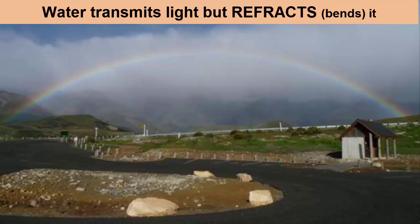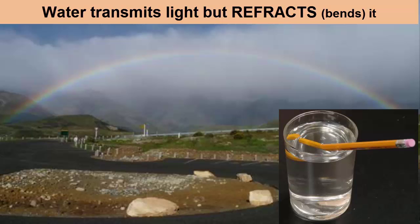Another important characteristic of water is how it transmits light. Most water lets at least some light through it, but this light is bent. We see that clearly when we put an object halfway into water and we see that the outside lines don't match up.